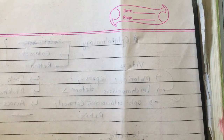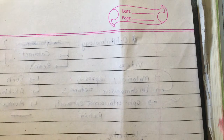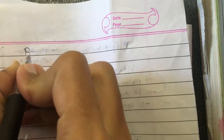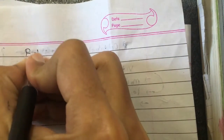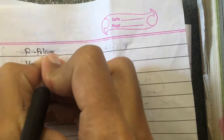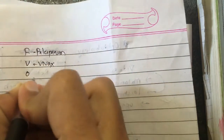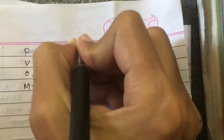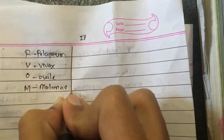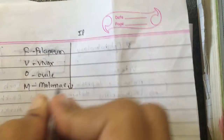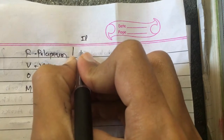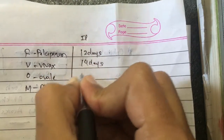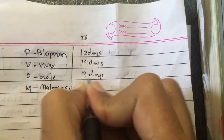Before going into the clinical features, let us talk about the incubation period. We have a mnemonic: YAFBOOM — that is falciparum, vivax, ovale, and malaria. The incubation period increases in the same order: falciparum is 12 days, vivax is 14 days, ovale is 17 days, and malaria is 28 days.